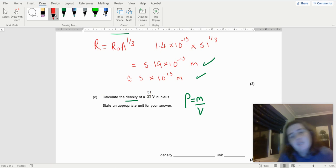So I've got mass divided by volume. State an appropriate unit for your answer. So I know my radius is approximately 5.19 × 10⁻¹⁵.